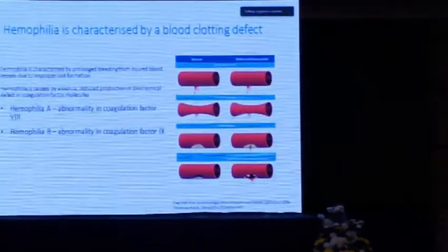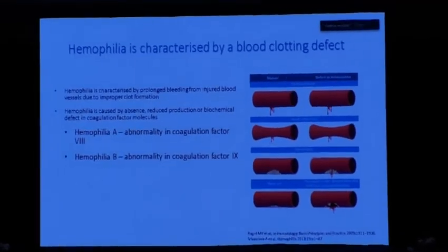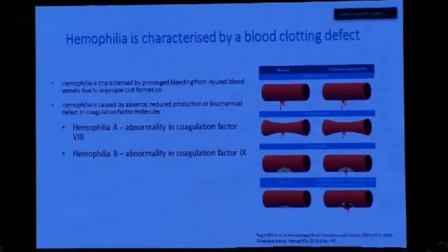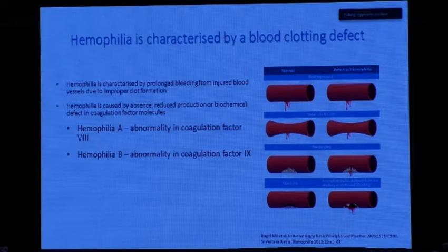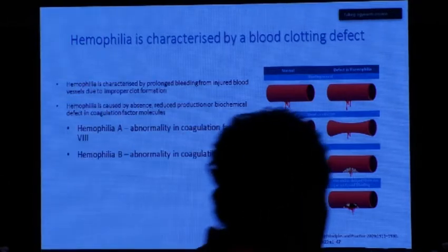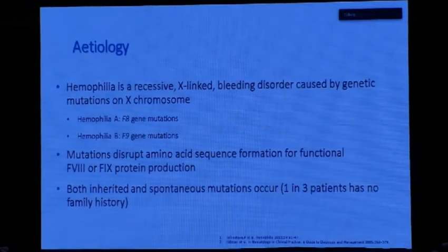We always talk about Hemophilia A, but what about Hemophilia B? I am the lucky last speaker — I have five minutes on Hemophilia B. I will not talk about the factor in isolation; I will talk about Hemophilia B. You all know hemophilia is an abnormality in coagulation factor VIII, and Hemophilia B is an abnormality in coagulation factor IX. In my presentation I will focus on the difference between Hemophilia A and Hemophilia B in pathophysiology, complications, and treatment.